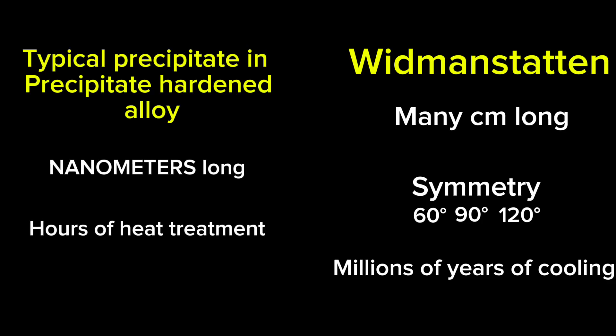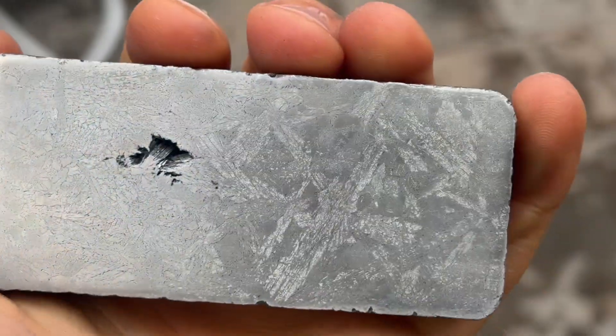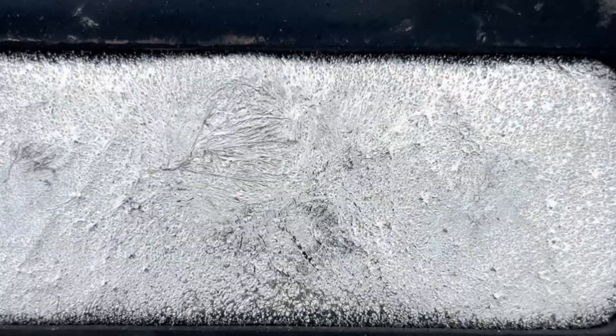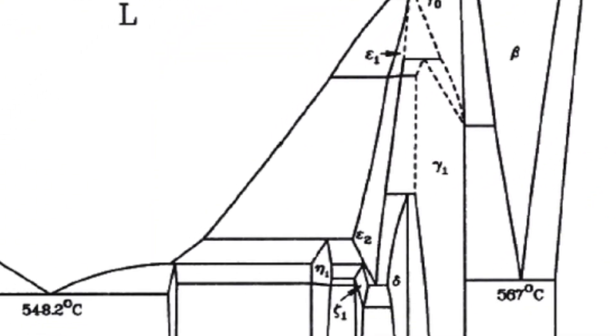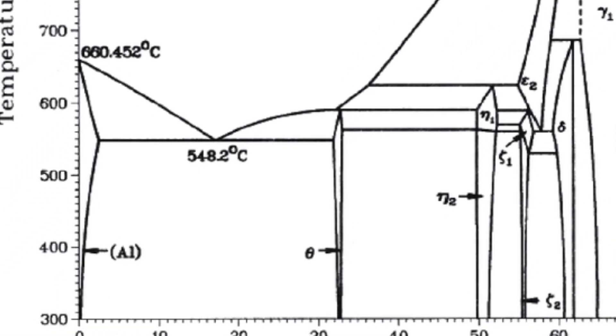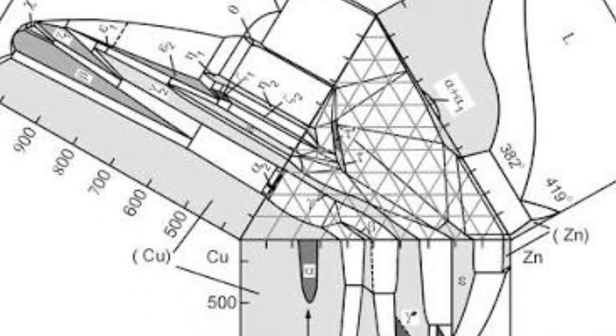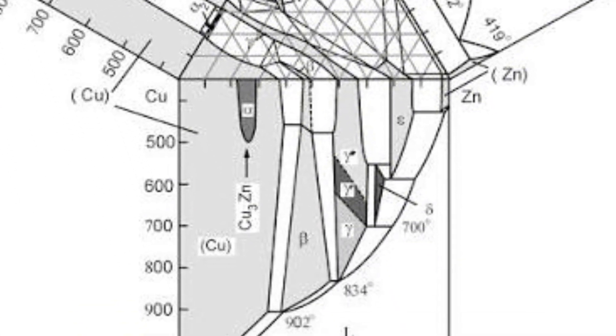In this series, we are exploring how to create similar large microstructures on much more appropriate timescales, and we've made some really cool ones so far. However, each one has been a two-element system like copper and aluminum or zinc and copper. But I'm ready to explore a three-element system, and if you thought binary phase diagrams were difficult, ternary phase diagrams are a whole other beast.